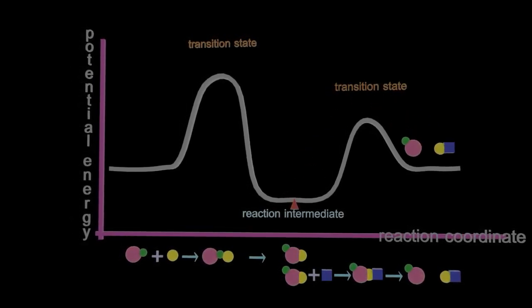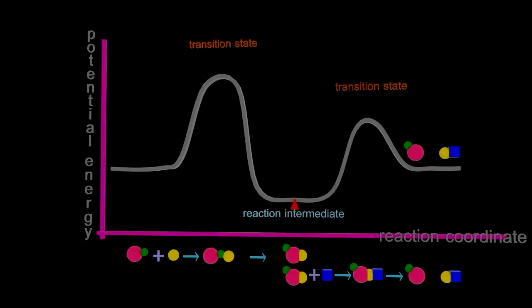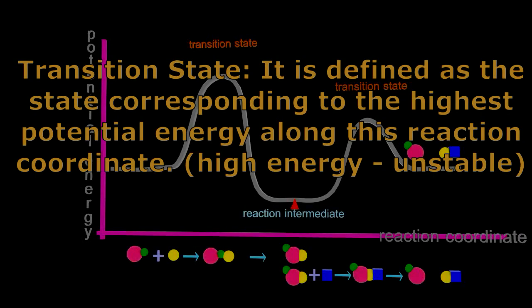And finally to the products of this two-step mechanism. The transition state is defined as the state corresponding to the highest potential energy along this reaction coordinate—not as products, not as reactants.